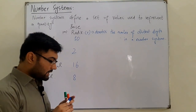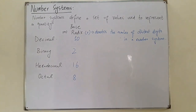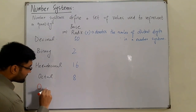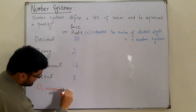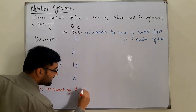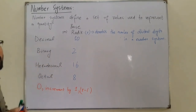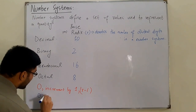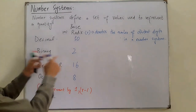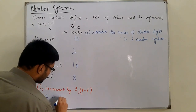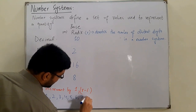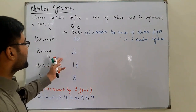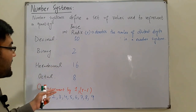Now what are these digits? We start from 0, then increment by 1 until the value r minus 1. So for decimal, 10 minus 1 is 9 — we go from 0 to 9: 0, 1, 2, 3, 4, 5, 6, 7, 8, 9 — these are the 10 distinct digits. For binary, the base is 2, so 2 minus 1 is 1, giving us two distinct digits.